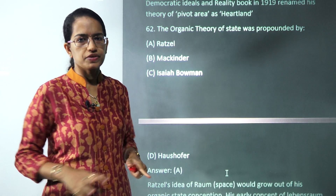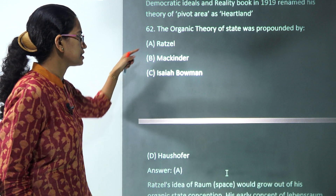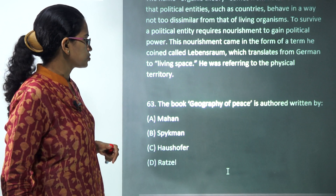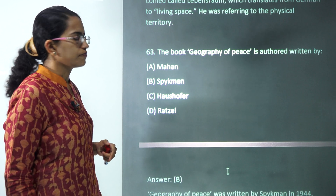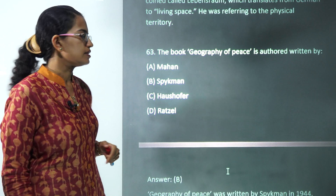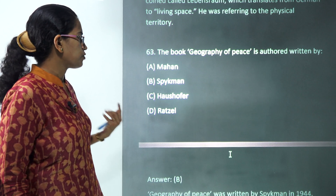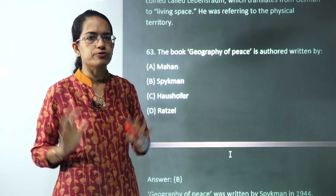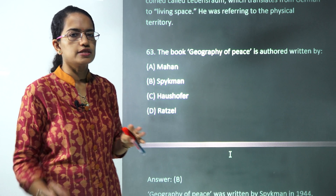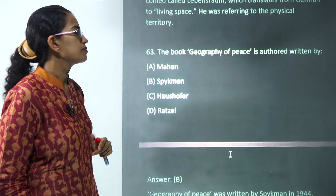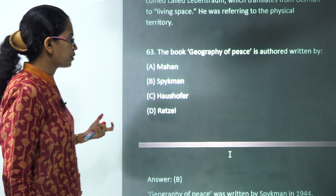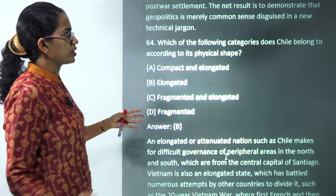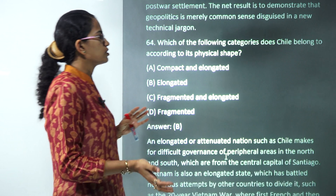The organic theory of state is a very direct question asked every time in the NET examination — the correct answer is Ratzel. 'Geography of Peace' was written by Spykman, from political geography. There were again four or five questions from political geography this time, making it an important section.